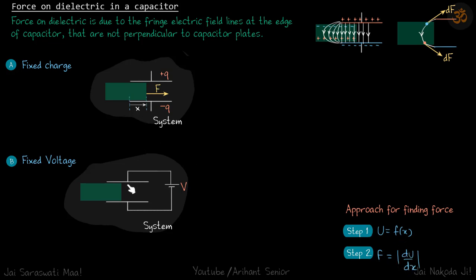For the battery case we use the same approach, but we must also include the battery in the system. We write U of the system as a function of x, and then dU/dx gives the value of the force.